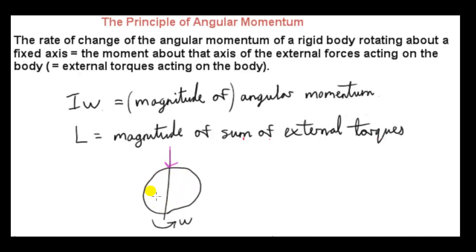Consider an external force on this body that creates a torque. A force acting along this axis of rotation will not create any torque — it will not cause the body to rotate about this axis; it will only cause the body to be displaced. Similarly, an external force acting parallel to this axis will not create any torque about this axis and won't have the effect of rotating the body about this axis. So the external forces must not be parallel to this axis.